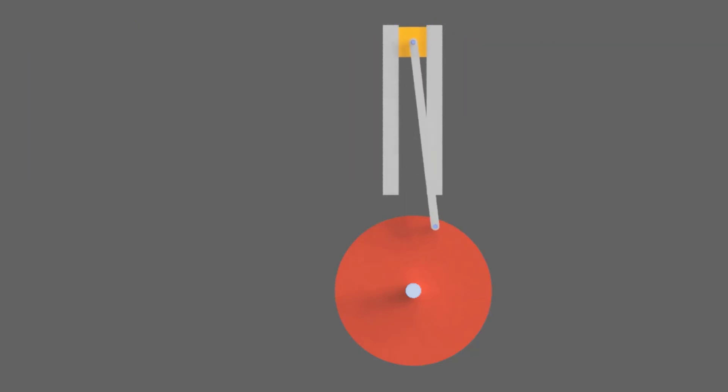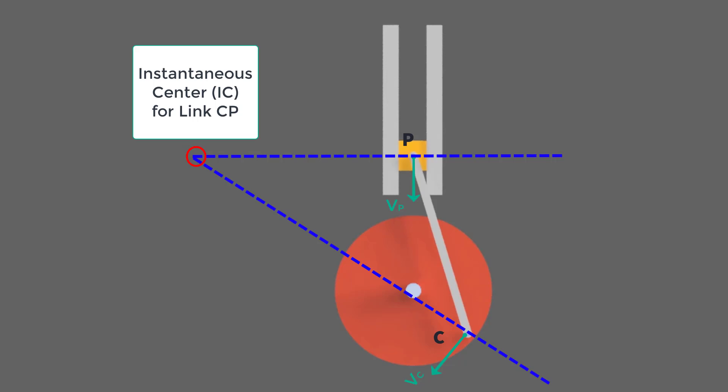Now we will move to the next position for link CP. We can draw a velocity vector at C, a velocity vector at P, then we draw our perpendicular line to the vector at C, perpendicular line to the vector at P. Then we know both of these intersect at some point, and this will be our instantaneous center of zero velocity for the link.